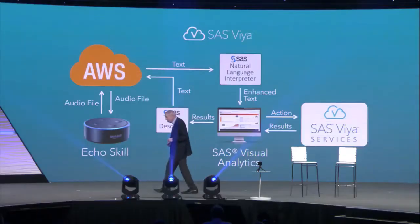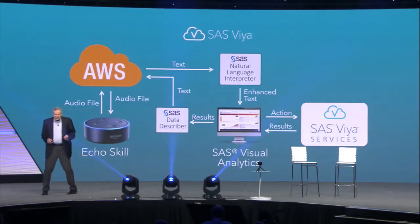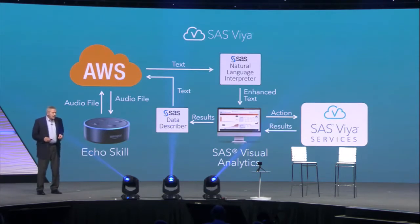I want to talk a little bit about cognitive computing. We're going to use the Echo Dot to translate our speech into text, and then we're going to take over from that point on. We talked to Echo, it goes up to the AWS cloud where it's converted into text, which is sent over to our natural language processor, in which we have stored hundreds of phrases that will help to determine which of those phrases is the correct one.